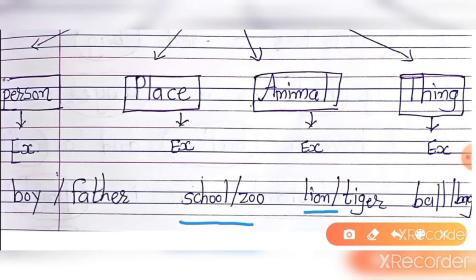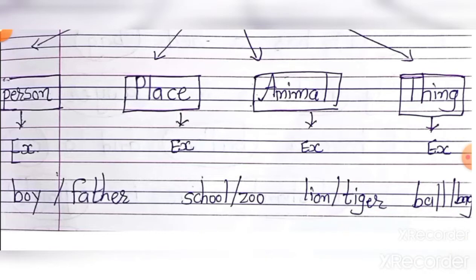Then animal — example lion, tiger. Or thing — thing ka matlab hai cheese, jaise ball, bag, etc. Right.